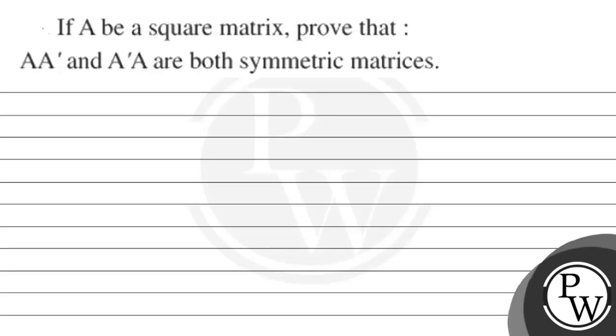Hello, let's first read the question. The question says that if A be the square matrix, then prove that AA' and A'A both are symmetric matrices.